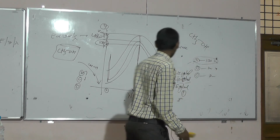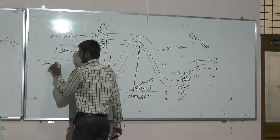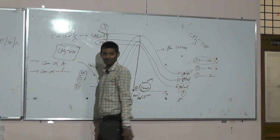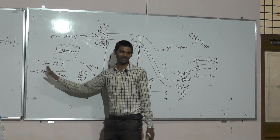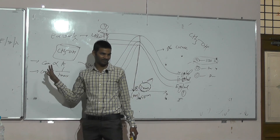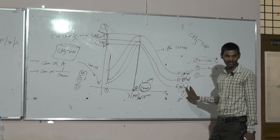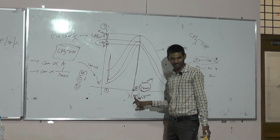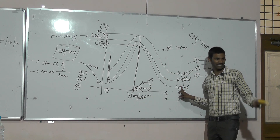So simply: concentration depends on the intensity of absorption, but concentration does not depend on lambda max. There is no correlation between concentration and lambda max; the correlation is between concentration and intensity of absorption. The intensity of absorbance changes based on the concentration of the drug sample, but there is no change in the lambda max while changing the concentration — whether increasing the concentration or increasing the dilution of the same sample.